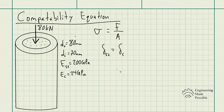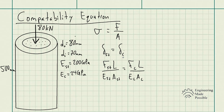This relationship lets us solve for how much force the steel experiences and how much the concrete experiences. Writing the equations: force in steel times length divided by modulus of elasticity of steel and its cross-sectional area equals force in concrete divided by its modulus of elasticity and cross-sectional area times length. Since the length is 500 millimeters and is the same for both, it cancels out.